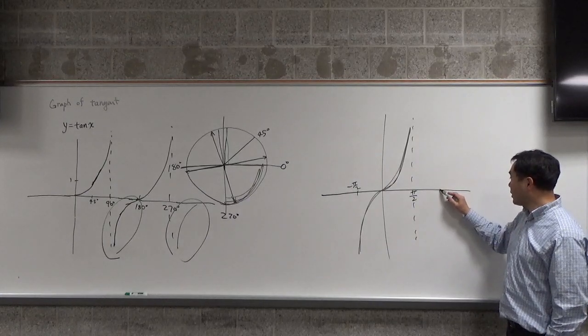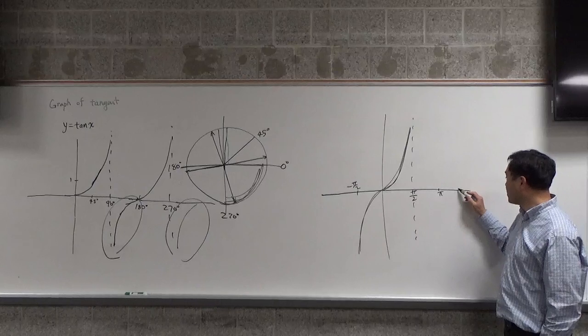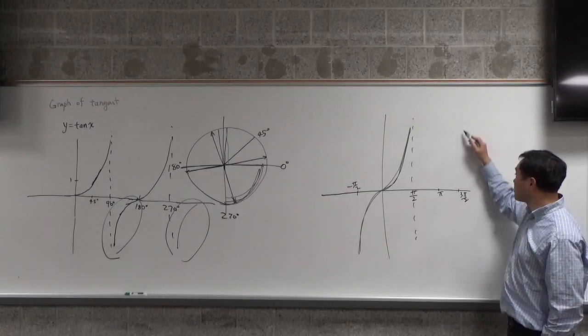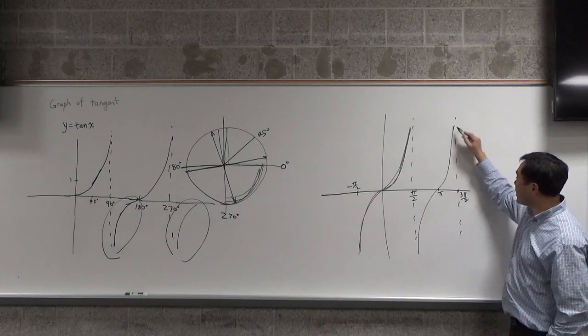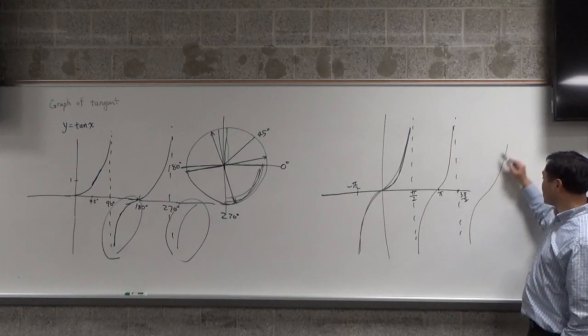And then, at pi, you get another zero. At 3 pi over 2, you get another vertical asymptote. So you're going to get that, and you're going to get that again.